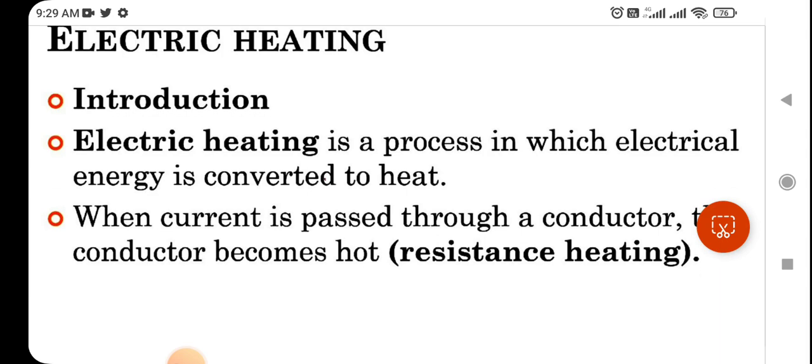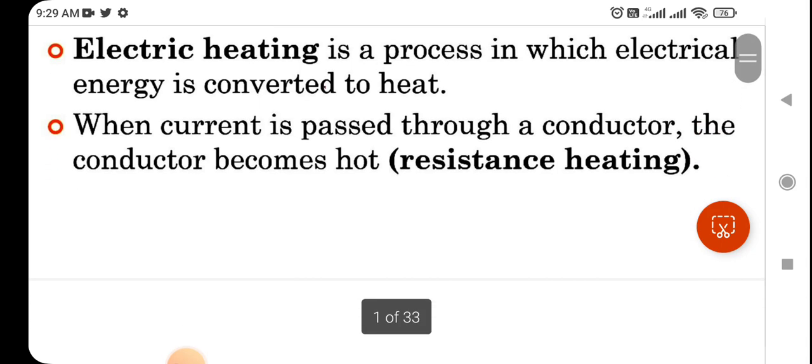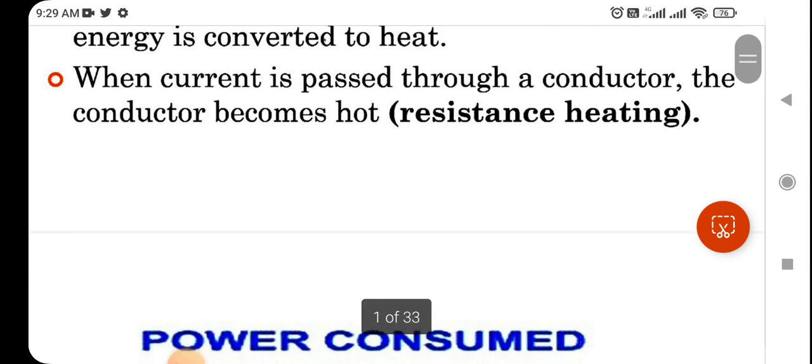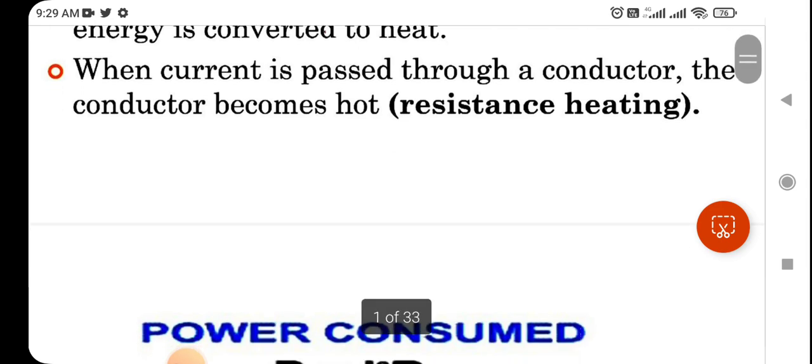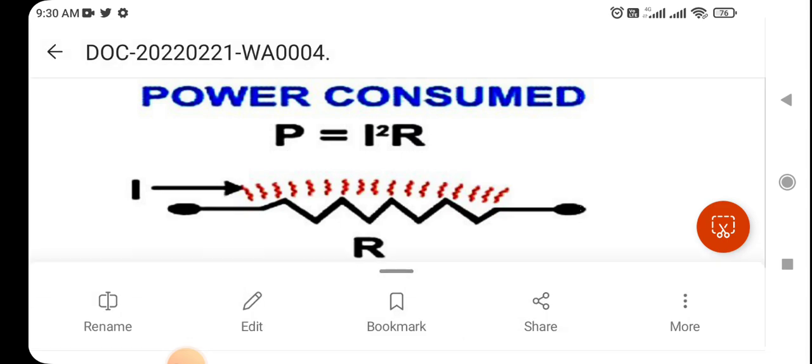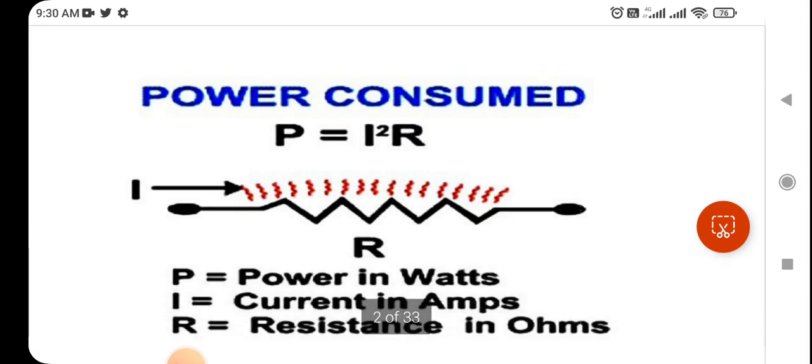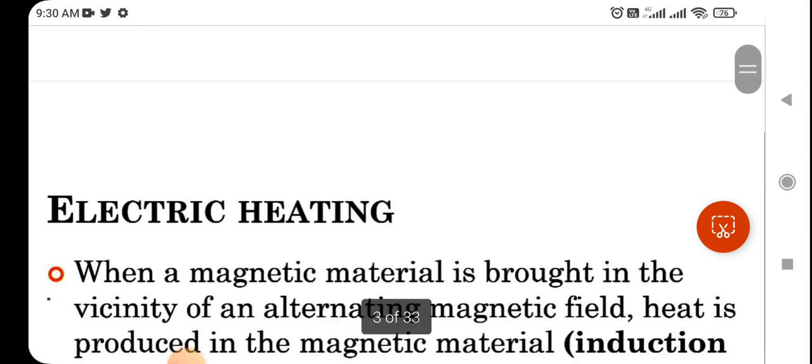Electric heating is a process in which electrical energy is converted to heat. Majorly we are going to see resistance heating, which is when current is passed through a conductor, the conductor becomes hot. This kind of heating is known as resistance heating. The power consumed by resistance where P equals power in watts, I is current, and R is the resistance in ohms.